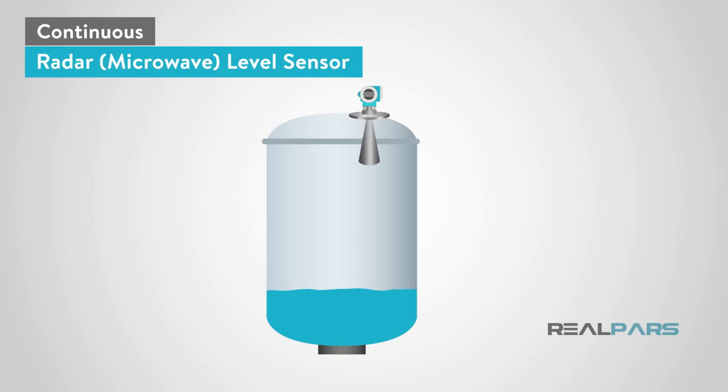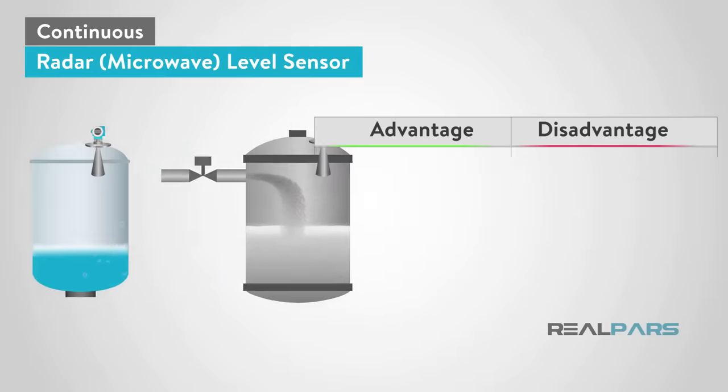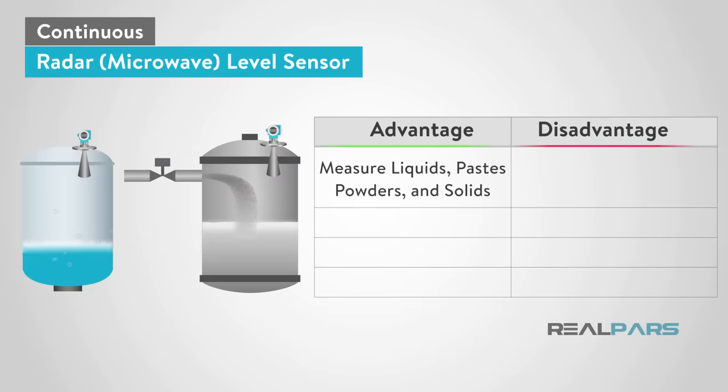Radar sensors are not affected by temperature, pressure, or dust. They can also measure liquids, pastes, powders, and solids. They are very accurate and require no calibration. This type of level sensor is also non-invasive because it does not have to touch the product that it is sensing.